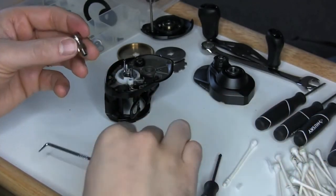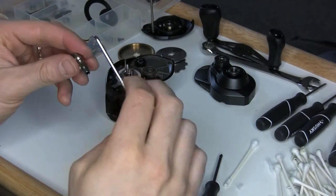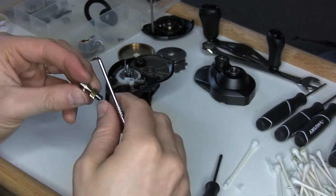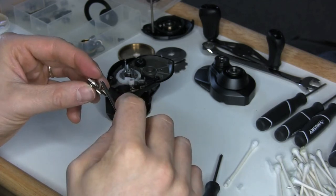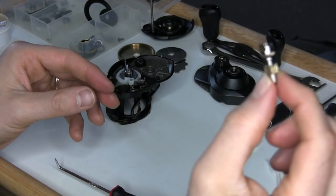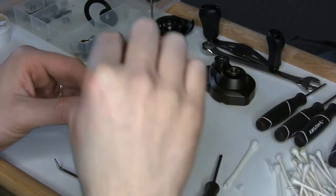And the same thing. Just inspecting these teeth. Making sure the teeth are in good shape. That there's no other grease in there. And then that part looks good. Alright, so now we're going to work on our drag washer.